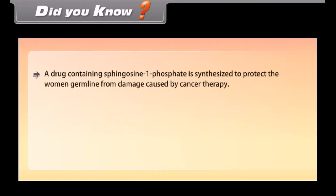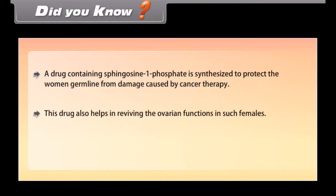Did you know? A drug containing sphingosine 1-phosphate is synthesized to protect women's germ line from damage caused by cancer therapy. This drug also helps in reviving ovarian functions in such females.